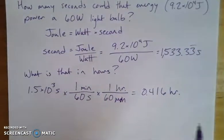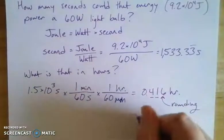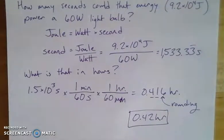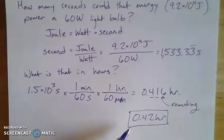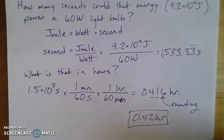Going back to two significant figures, rounding 0.416 gives 0.42 hours. We were talking about Hershey's Kisses — how could we forget we were talking about chocolate? The energy in one Hershey's Kiss could power a 60-watt light bulb for 0.42 hours. Think about a whole bag of Hershey's Kisses — how many light bulbs could you power? With energy, we can use dimensional analysis to give us information about practical, meaningful quantities.